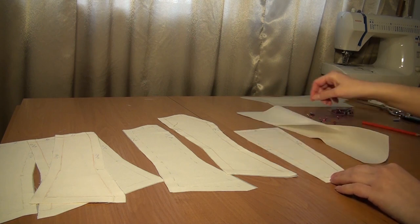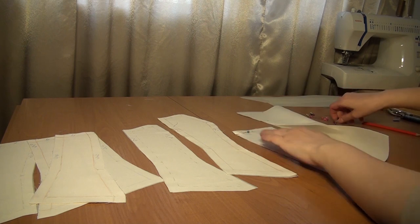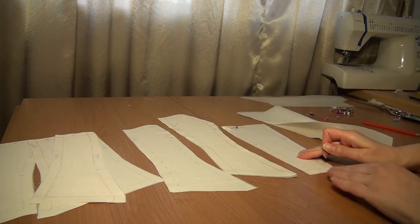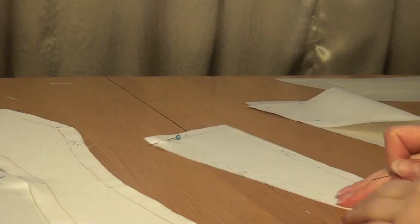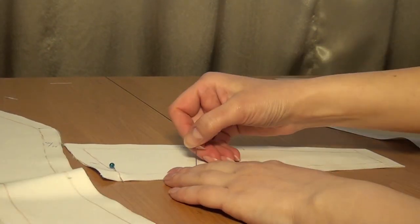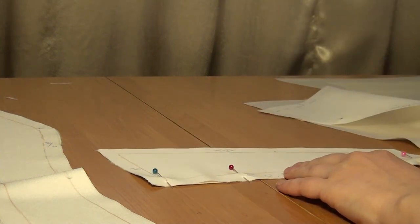This is the line of the middle of the back. And now, for details number eight, that are folded with the front side to each other along the line of the middle of the back, I pierce the pins. A zipper will be sewn along this line.